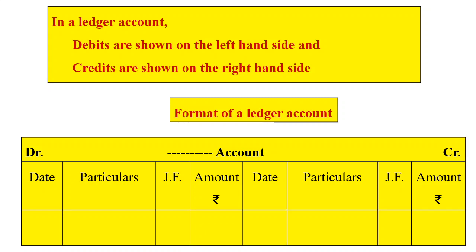Format of a ledger account: Debit side — account name — Credit side. Columns include: date, particulars, JF (journal folio), amount on the debit side; and date, particulars, JF (journal folio), amount on the credit side.